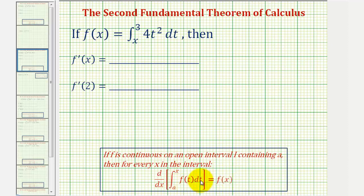Looking at the integral, notice how the lower limit of integration is the constant a, and the upper limit of integration is the variable x — the same variable with respect to which we're integrating. So to find the derivative of this integral, we simply substitute x for t in our function f.